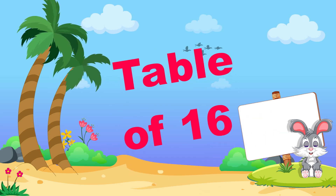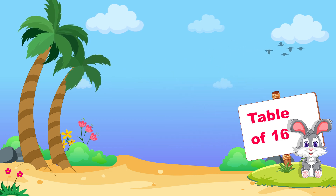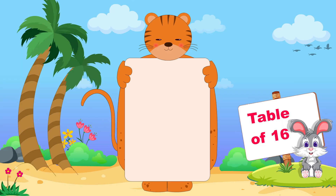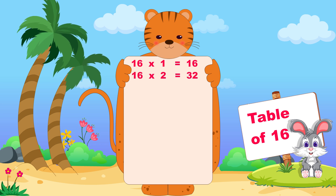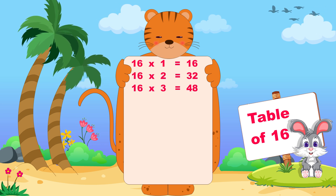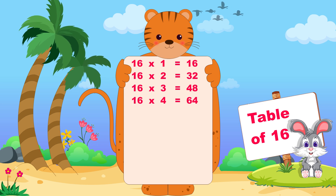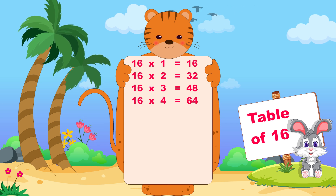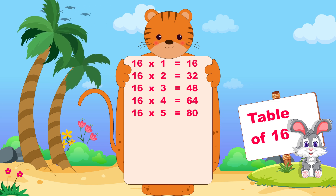Let's learn now table of sixteen. Sixteen ones are sixteen, sixteen twos are thirty-two, sixteen threes are forty-eight, sixteen fours are sixty-four, sixteen fives are eighty.